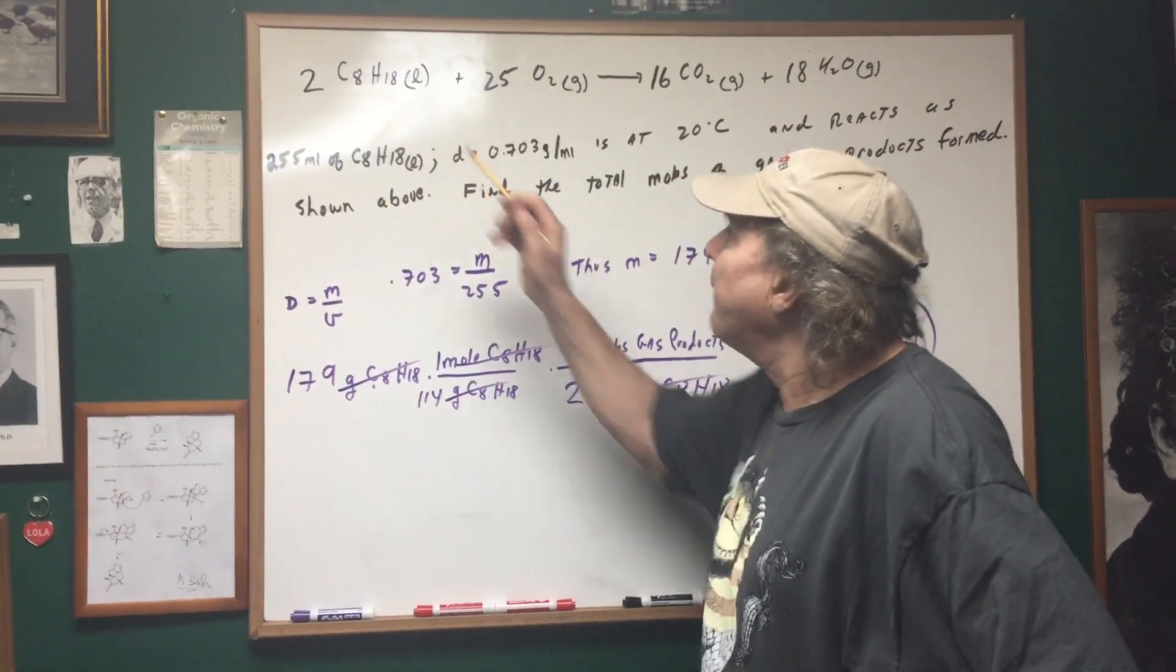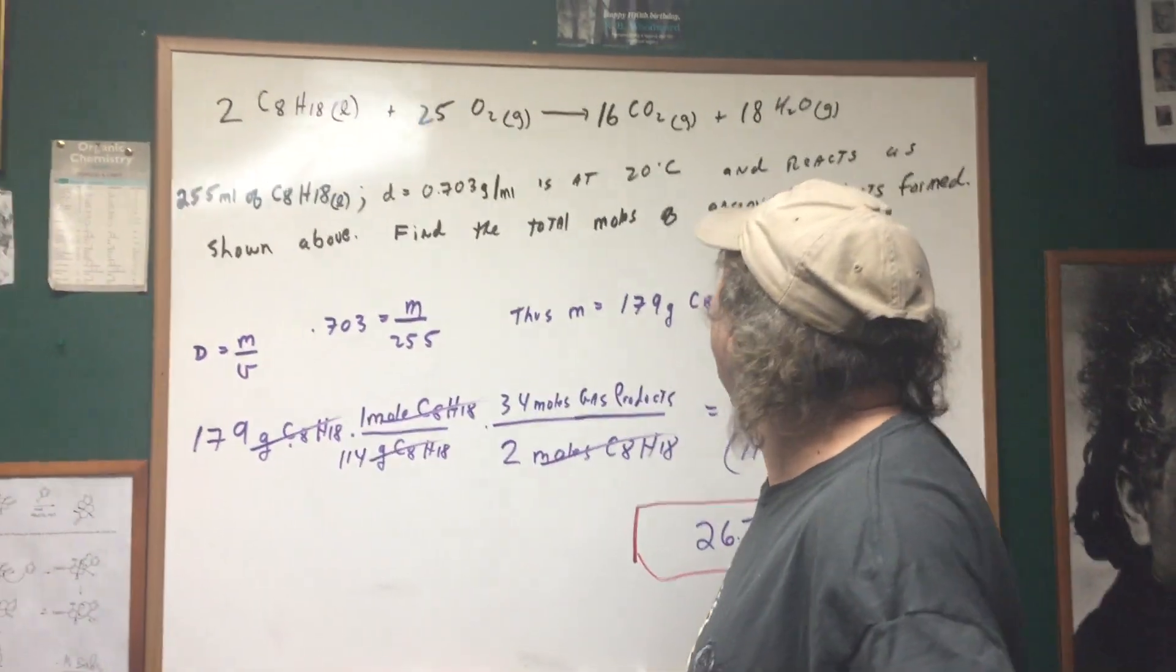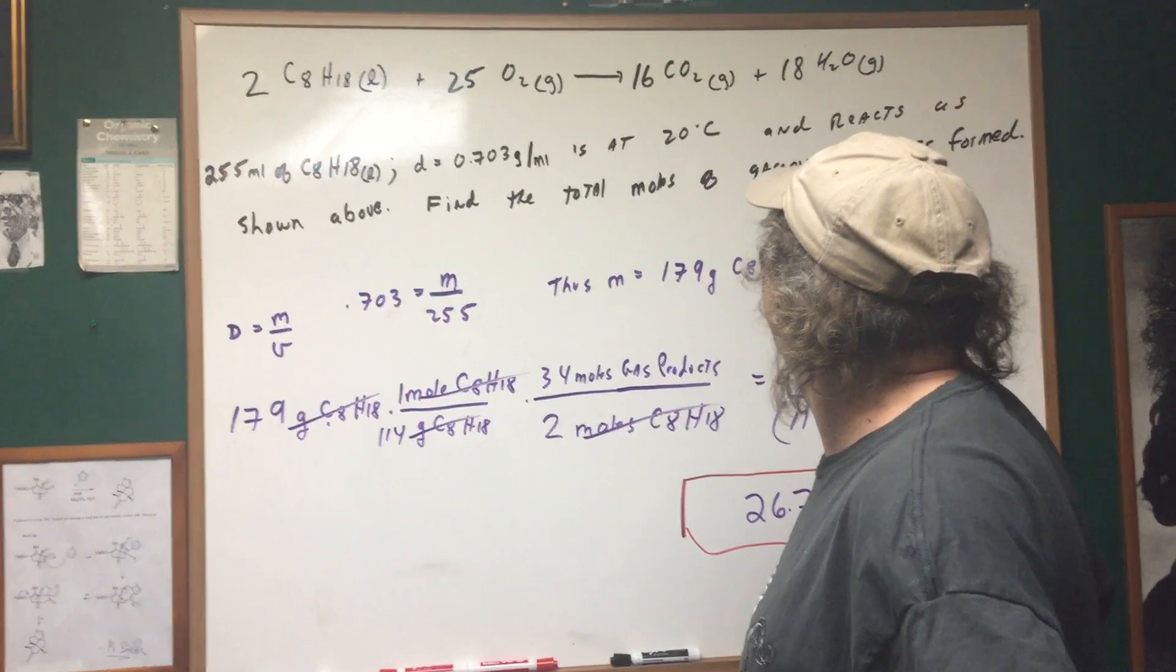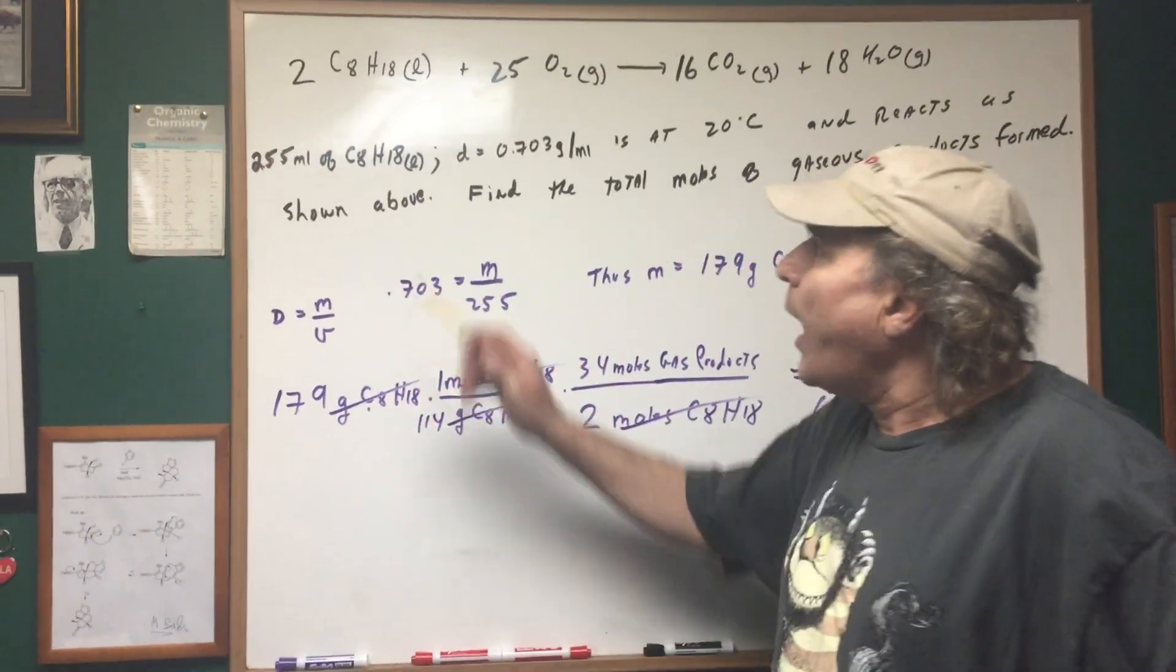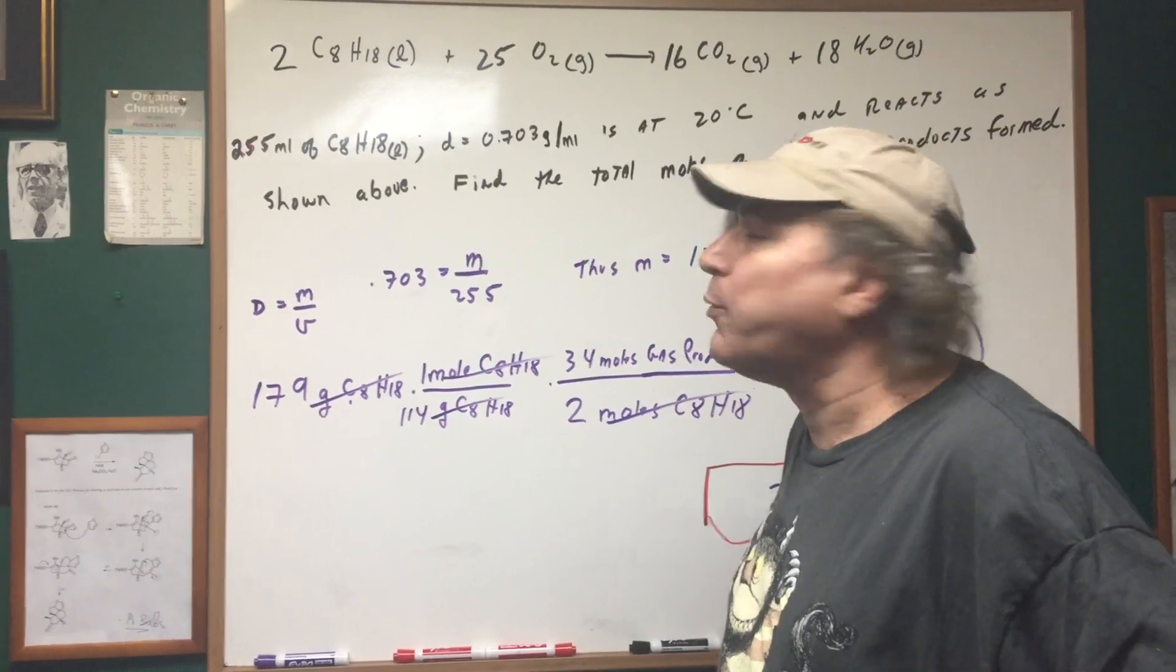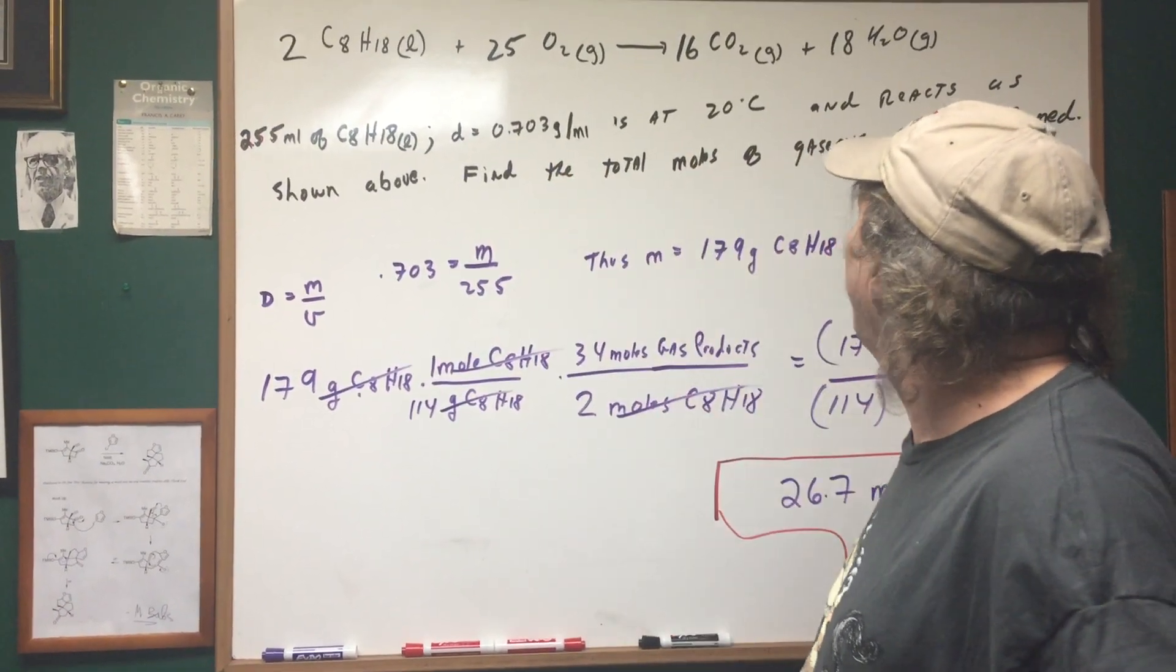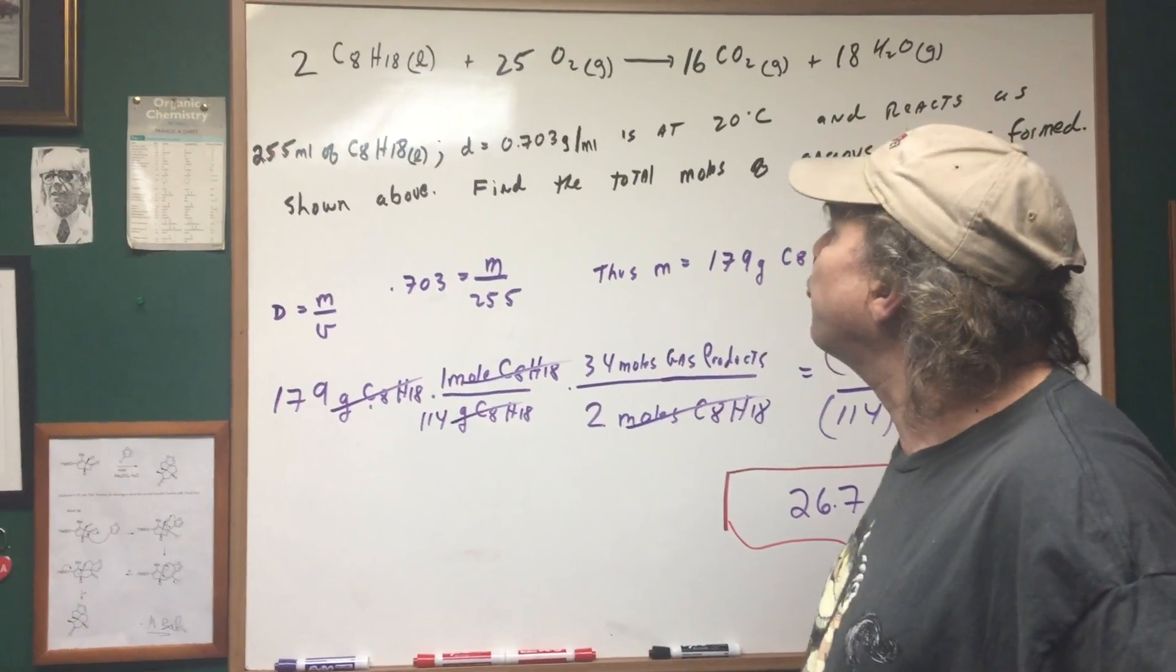So in this example, I'm going to take liquid octane reacting with oxygen and we get CO2 and H2O gas. We have 255 milliliters of liquid octane, the density is 0.703, and we're at 20°C and it reacts as shown above.